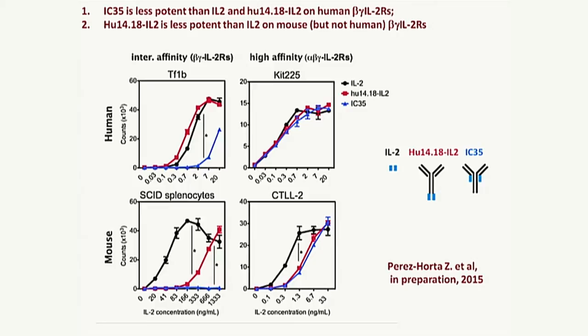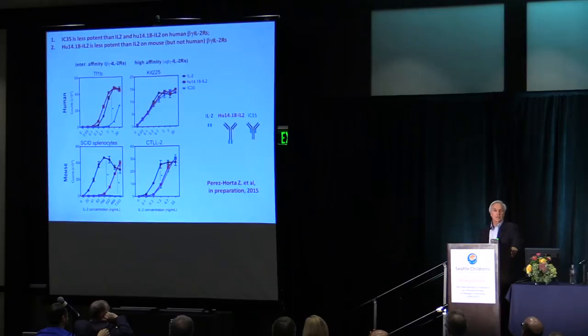We'd like to move ahead with clinical testing of this, but we believe in preclinical modeling and want more in vivo data first. The trouble is that because mouse and human receptors differ, this molecule with IL-2 on the light chain binds much less well on mouse intermediate-affinity receptors. So Steve is creating a surrogate that can be used in mice to mimic the curves we see in human, and that work still needs to move into in vivo testing.